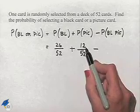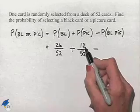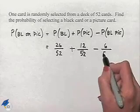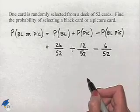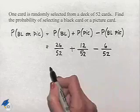Of those picture cards, half will be black, so therefore 6 out of the 12. So I'm going to have 6 out of 52 as the probability of choosing a black picture card.